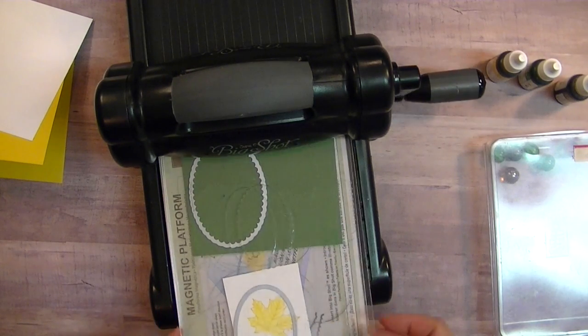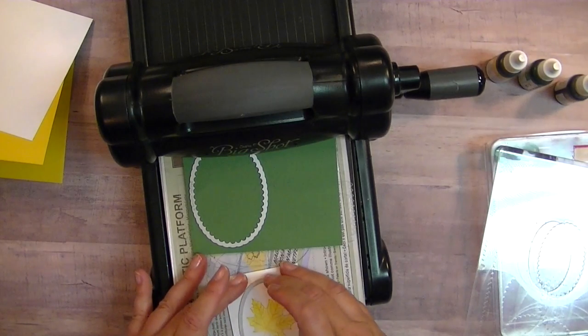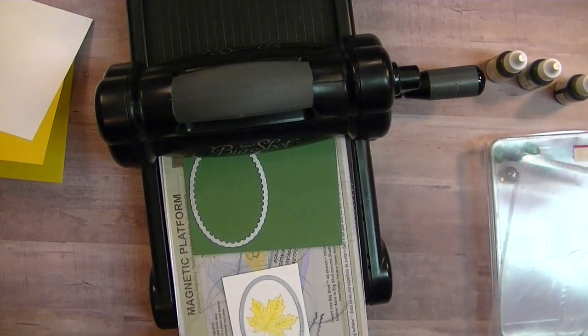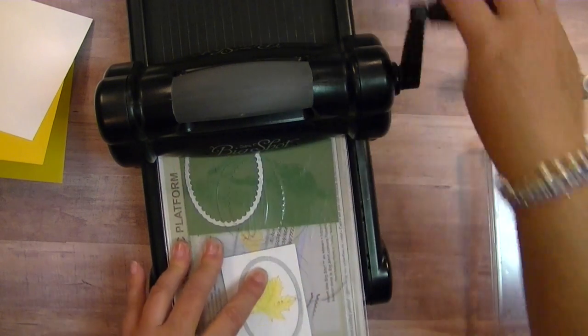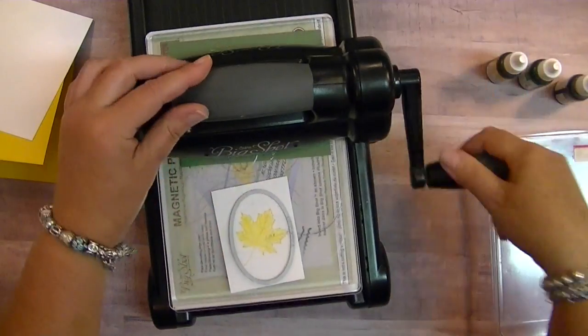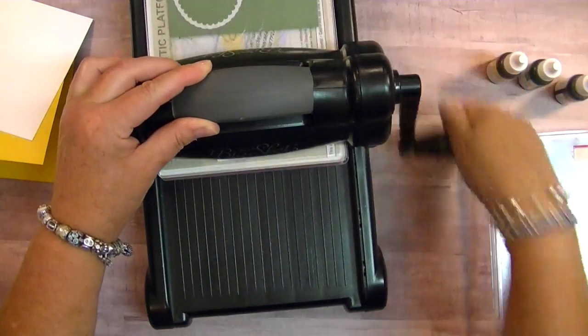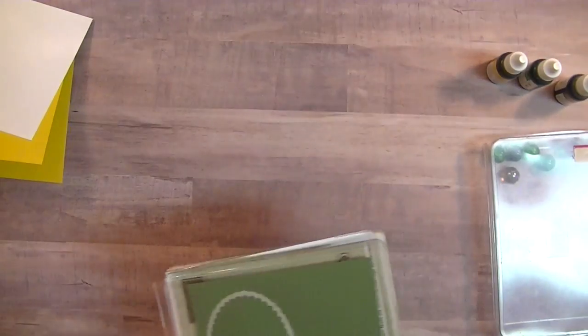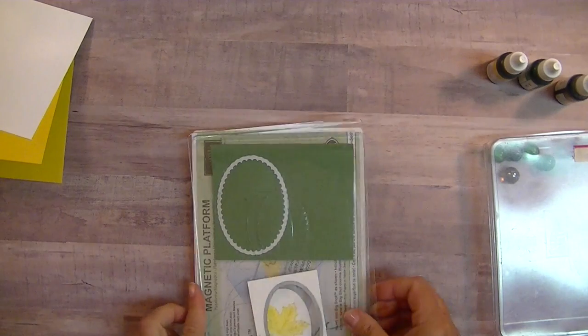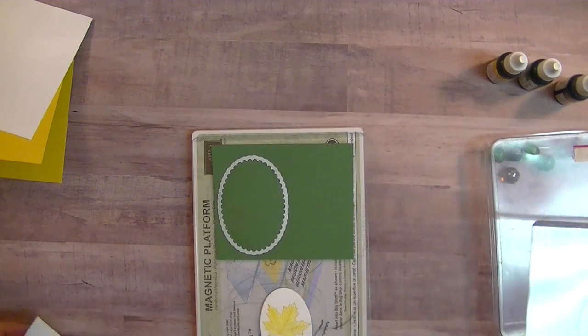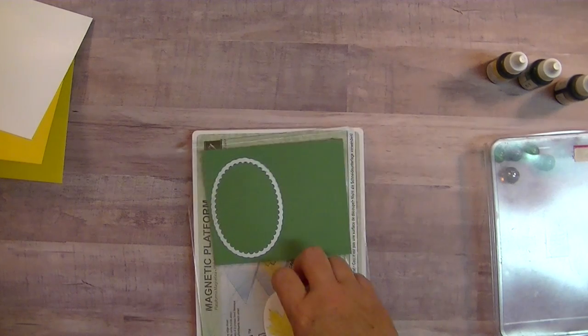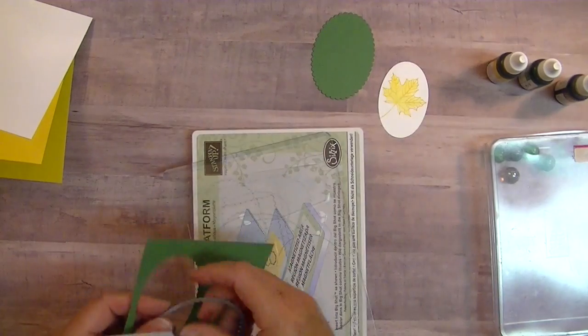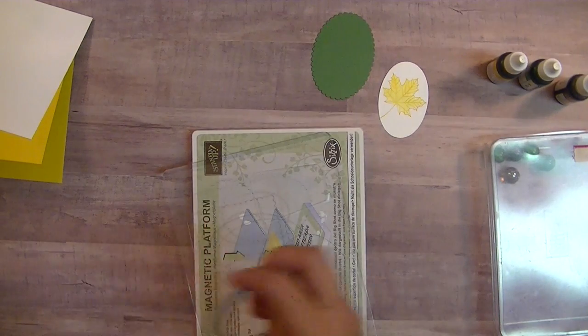And then you're simply, oops, it moved. Hold the phone. There we go. We're going to simply crank this through and get both pieces cut at one time. And it is as simple as that. Love it. Love my big shot. Use it all the time. All right. So we've got that piece already. And then we've got our garden green already. Okay. And this is the magnetic platform.